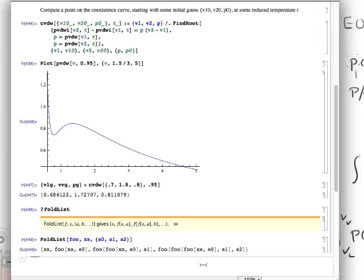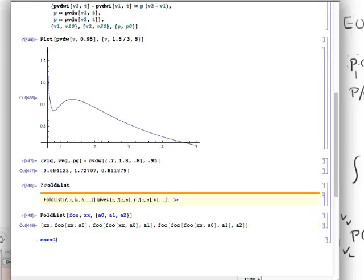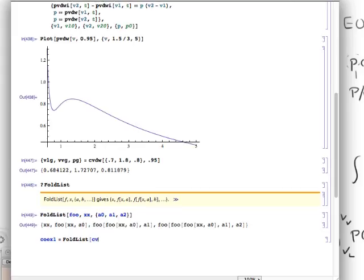So, the way that works is like this. So, the function Cvdw plays the role of the function. The initial guess that we want that gets the ball rolling is V1G, VLG, VVG, PG,